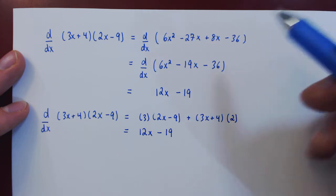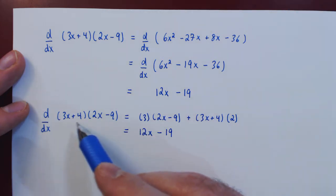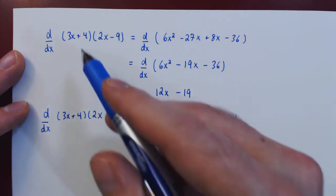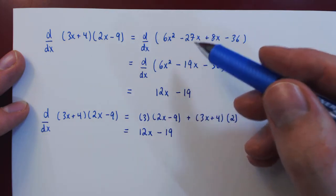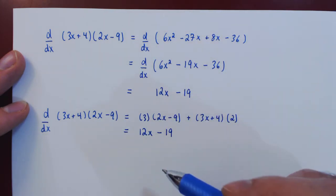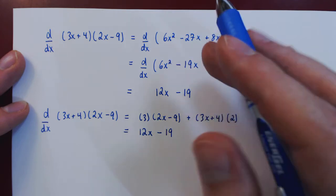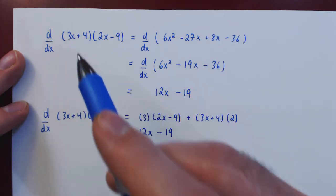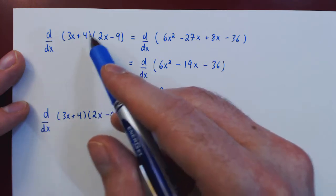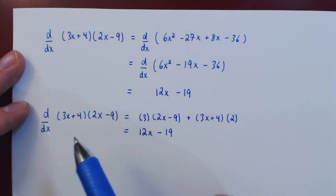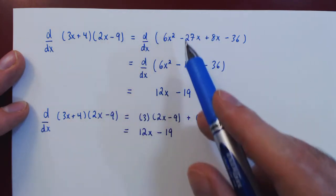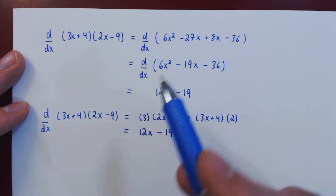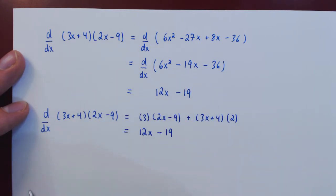Now, you might wonder, well why bother with the product rule if we can instead multiply things out and then simply use simpler rules of differentiation? Well, the answer is that sure in this case we were able to avoid the product rule by expanding out the product. But as we will see later on, this is not always possible. Sometimes you are stuck with a product that cannot be expanded. And so the product rule will sometimes be necessary.